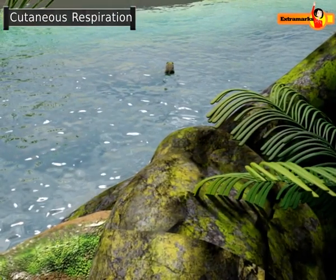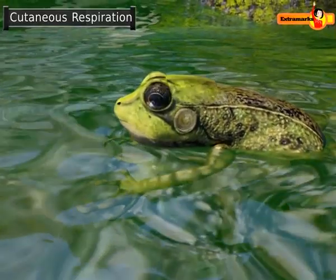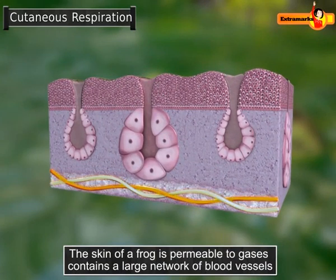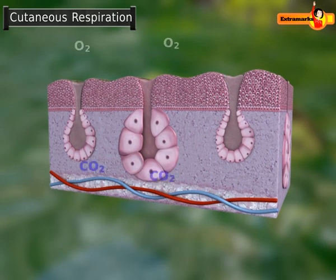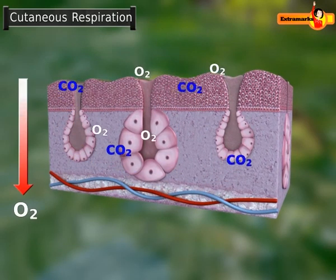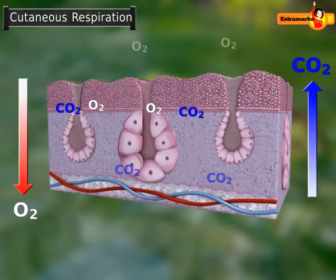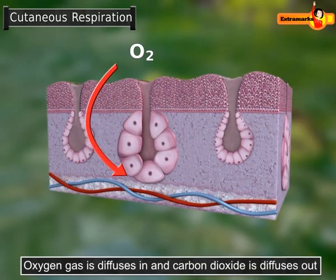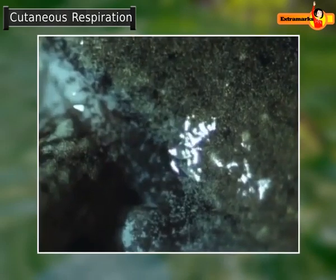The exchange of gases through the frog's moist skin is known as cutaneous respiration. The skin of a frog is composed of thin membranous tissue which is permeable to gases and contains a large network of blood vessels. This allows the respiratory gases to readily diffuse down their gradients between the blood vessels and the surrounding environment.